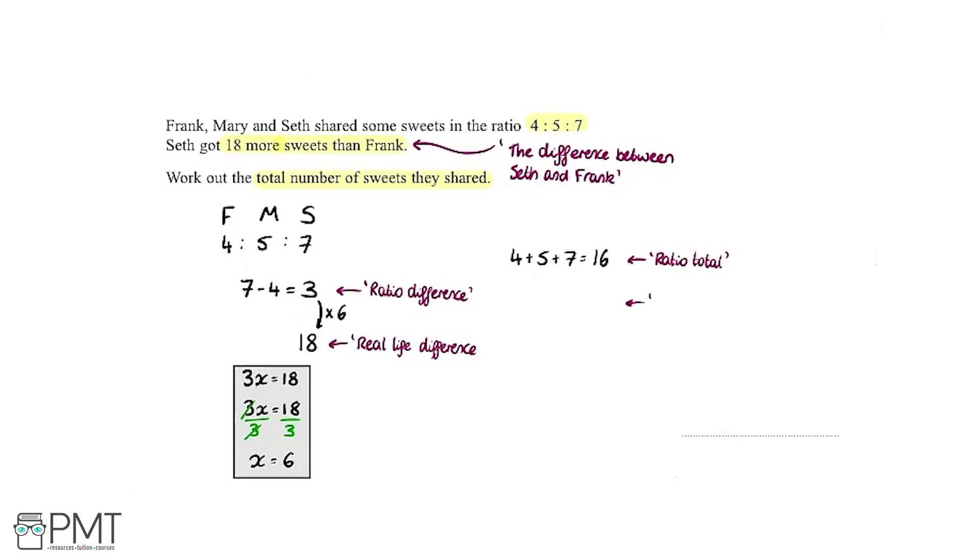We're going to use our key bit of information we worked out. The number that's linking the ratio to real life is 6, so again I'm going to do the same thing here. We multiply by 6. We've got 16 which is our ratio total, we're going to multiply that by 6.